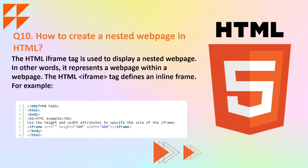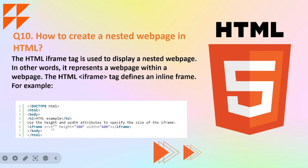Moving on to the last question: how do you create a nested web page in HTML? The HTML iframe tag is used to display a nested web page — in other words, it represents a web page within a web page. For example, we can use an iframe tag where, in the source attribute, we mention the link of the page, and the height and width define the window size in which you want to show your web page. In this way we can show a web page inside a web page.